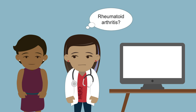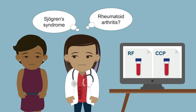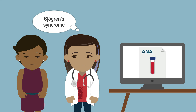For suspected rheumatoid arthritis, order RF and CCP. There are other biomarkers, but they are not universally available. Sjogren's syndrome is commonly seen together with rheumatoid arthritis. Hence, you can also get an ANA and additionally a Sjogren's panel, which includes two antibodies: SSA, also known as anti-Ro, and SSB, also known as anti-La.